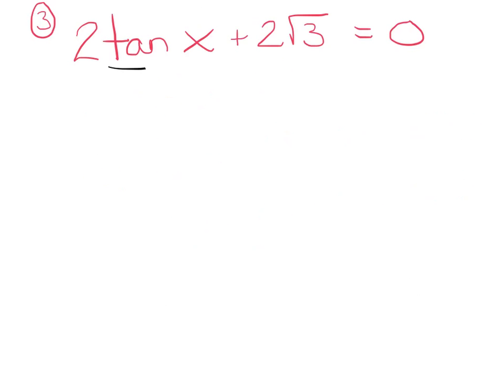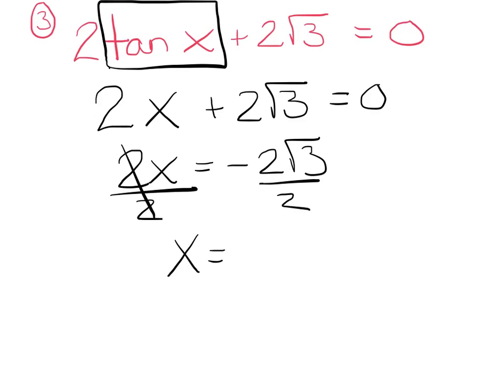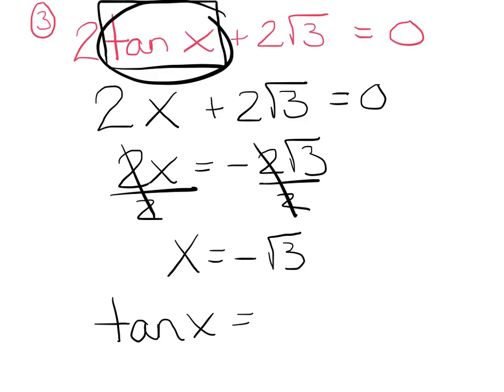My goal is to get tan x by itself. And again, if this really freaks you out, just think to yourself, it's really 2x plus 2 radical 3, and you're equal 0, and your goal is to get x by itself. What would you do? Well, I would subtract the 2 radical 3, and then I would divide both sides by 2. So I basically get x equals negative radical 3. Now, just remember, it's not really x, it's tan x. So I'm saying tangent of x equals negative radical 3. Now, again, if you can solve for tangent of x, I don't think you need to do this. I'm just trying to break you down for anybody that's stuck.